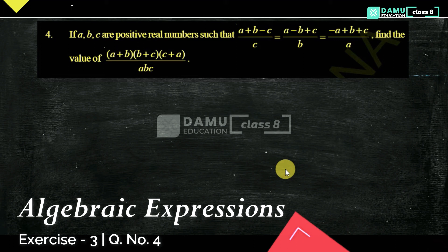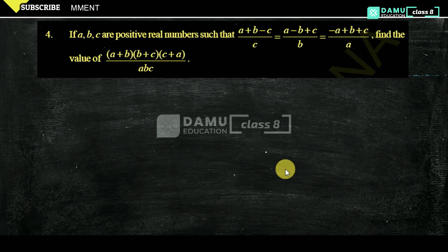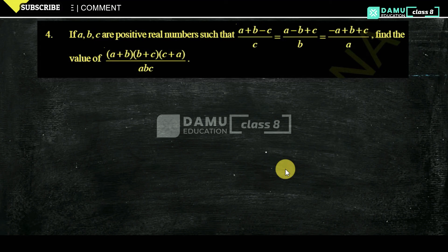So in this module we are going to discuss: if a, b, c are positive real numbers such that (a plus b minus c) divided by c equals (a minus b plus c) divided by b, equals (minus a plus b plus c) divided by a, then find the value of (a plus b) into (b plus c) into (c plus a), whole divided by a, b, c.